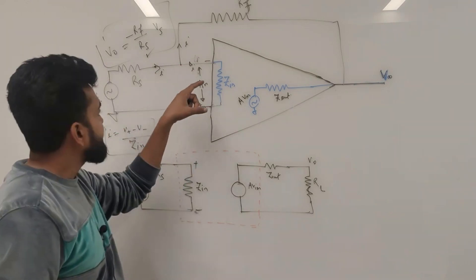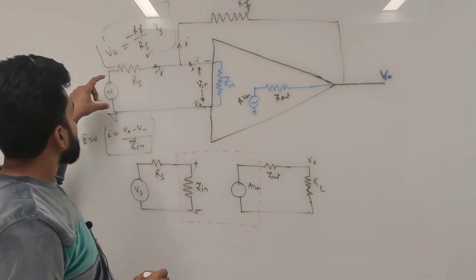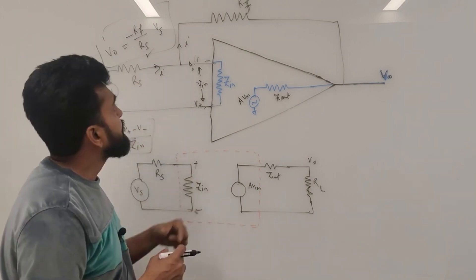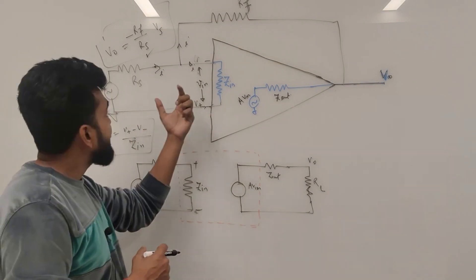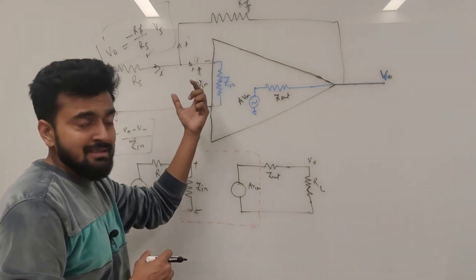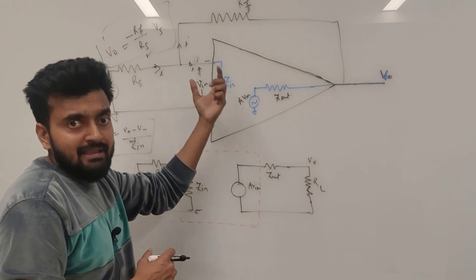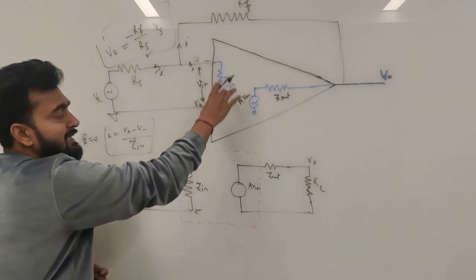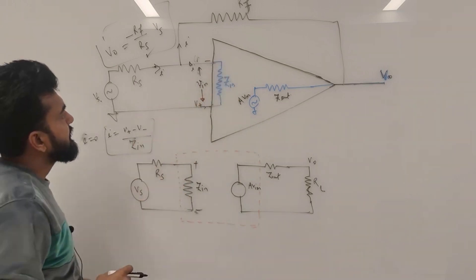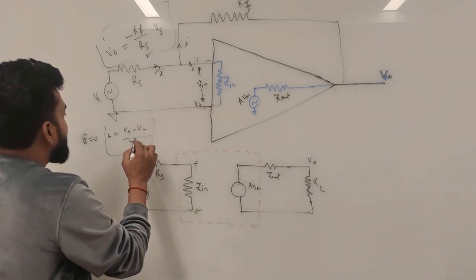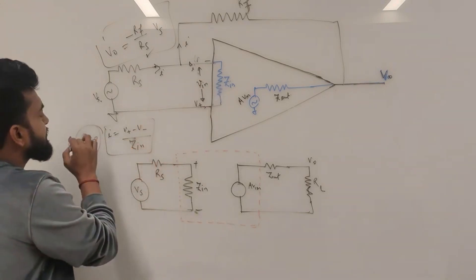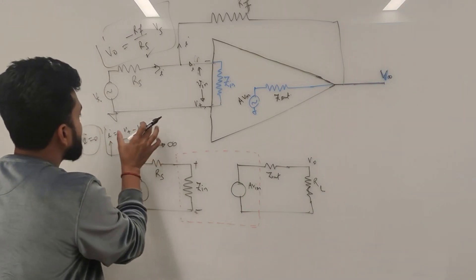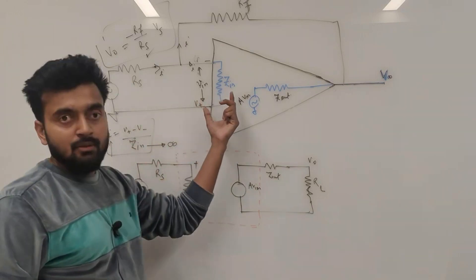We do not want any current to pass through this because it will load the source, and we do not want to load the source — it goes against the very essence of the amplifier, which is to amplify a weak signal. Therefore, we do not want any current passing through this wire. If Zin goes to infinity, then a finite value divided by infinity gives us zero current.